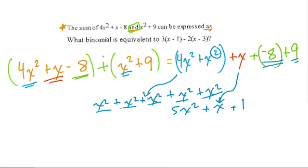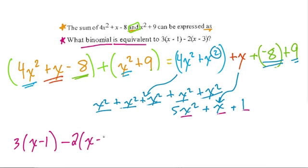Now in the next one it says, what binomial, right? And that just means a two-termed polynomial. So here this is three terms. 1, 2, 3. Separated by addition and you can't simplify it anymore. That's called a trinomial. Here they're asking, what binomial is equivalent to, and they give you two terms, 3 times x minus 1 minus 2 times x minus 3.